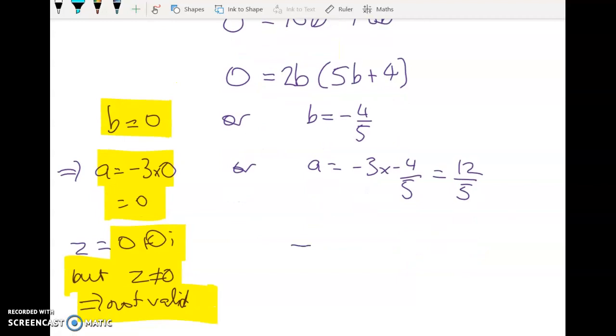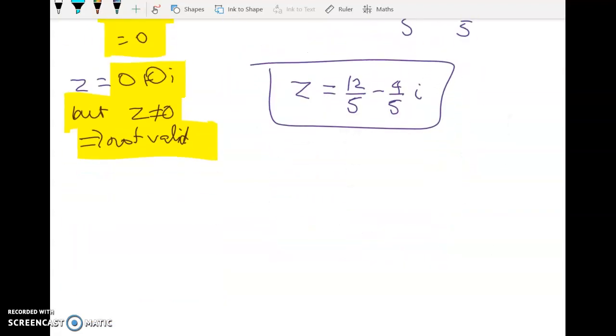So we've basically done, so z is equal to 12 fifths minus 4 fifths i. But if you're sitting there in the exam and you think, have I made a stupid mistake, which is very possible, we're just going to check that it works. All right?